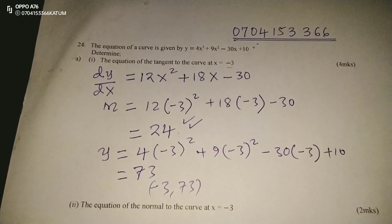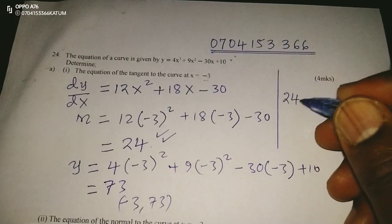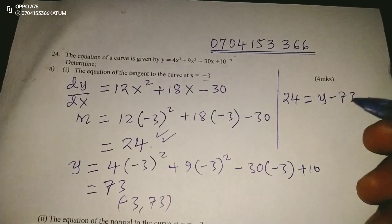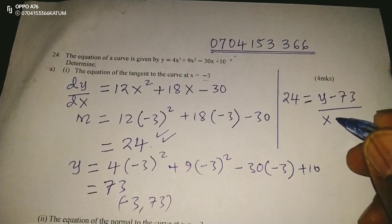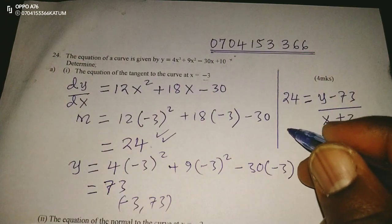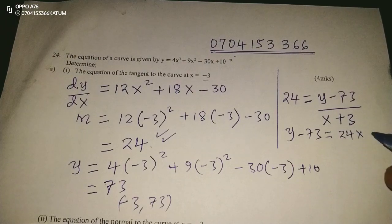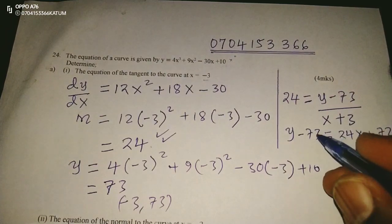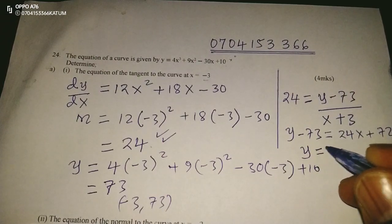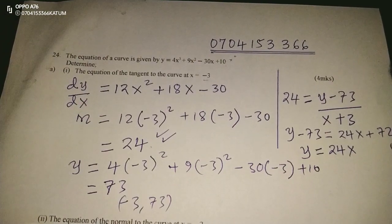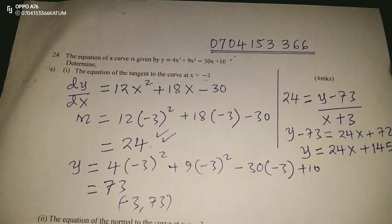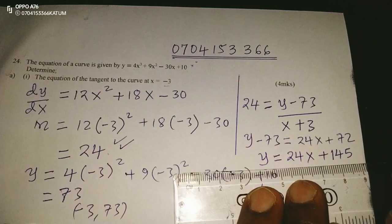To get the equation of the tangent we express the gradient: 24 equals (y − 7)/(x − (−3)), which is (y − 7)/(x + 3). Cross-multiplying gives y − 7 = 24x + 72. Therefore y = 24x + 72 + 7, which gives y = 24x + 79. This is the equation of the tangent at that point, since the gradient of the curve at a point equals the gradient of the tangent at the same point.